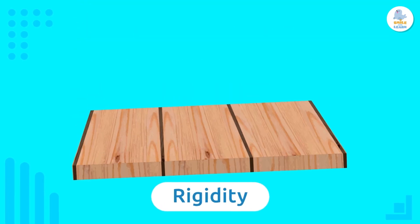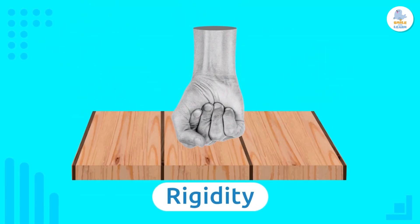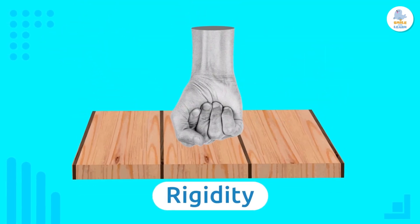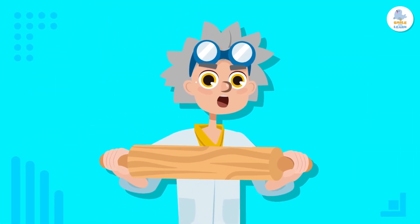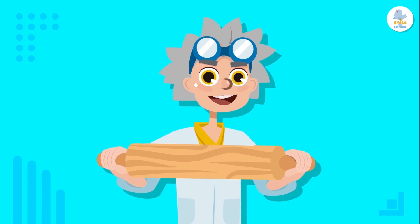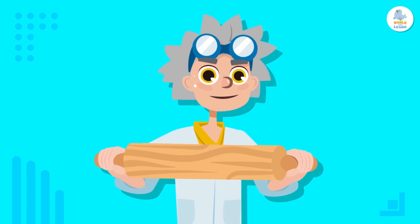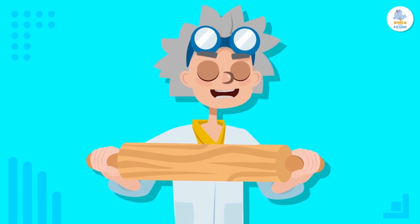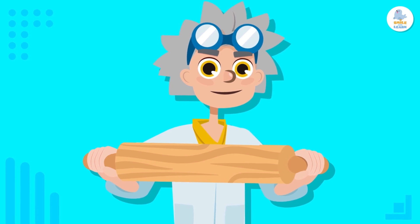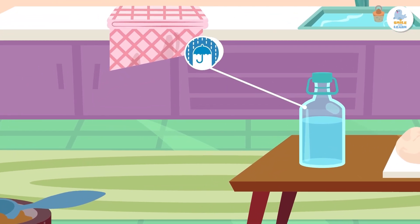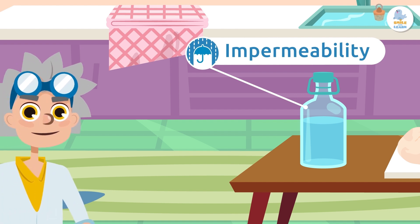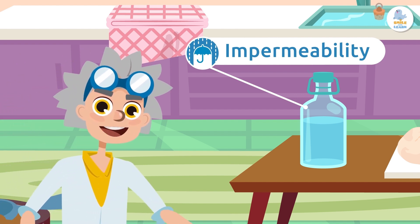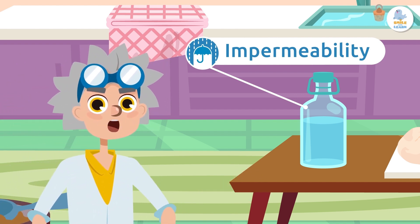Rigidity. Rigidity is a property of materials that do not bend or flex when a force is exerted on them. In other words, it is how an object resists external pressure. Do you think I will be able to bend this rolling pin?